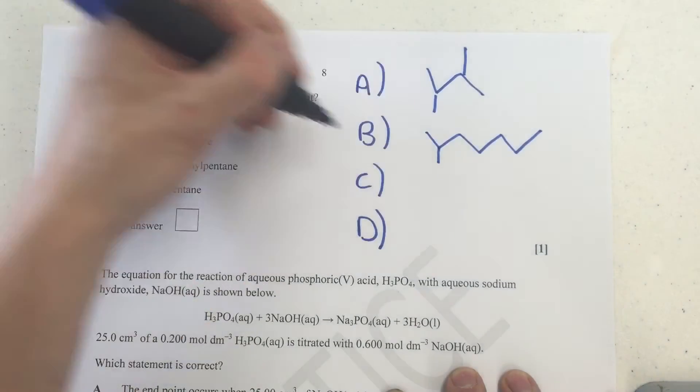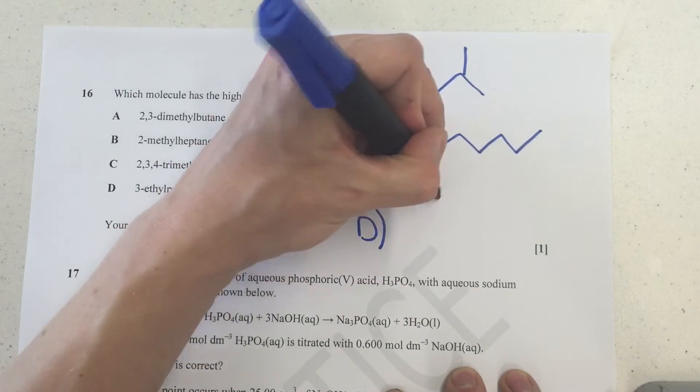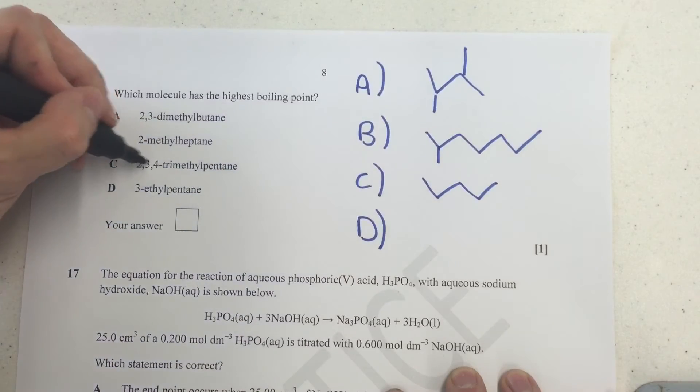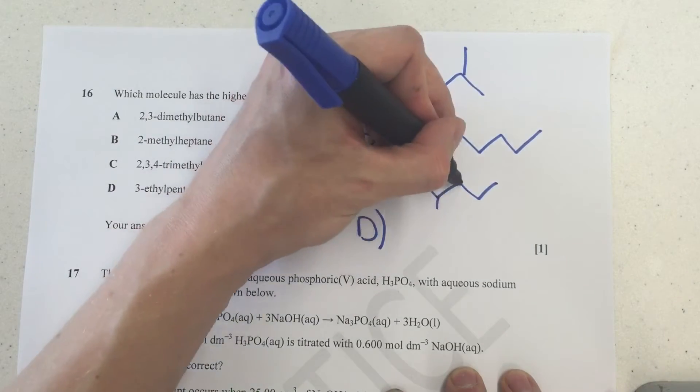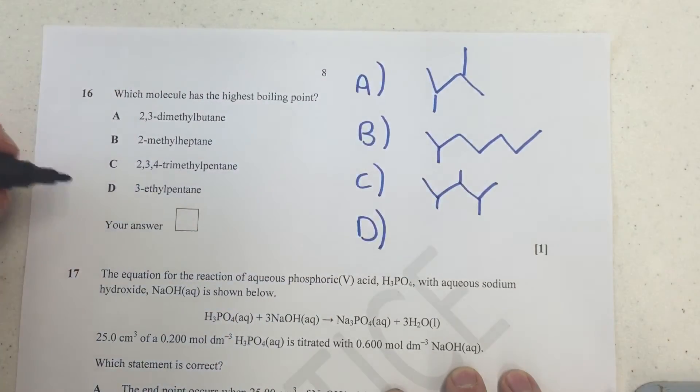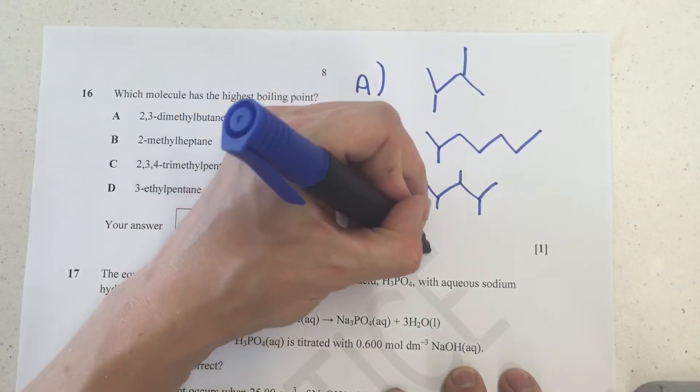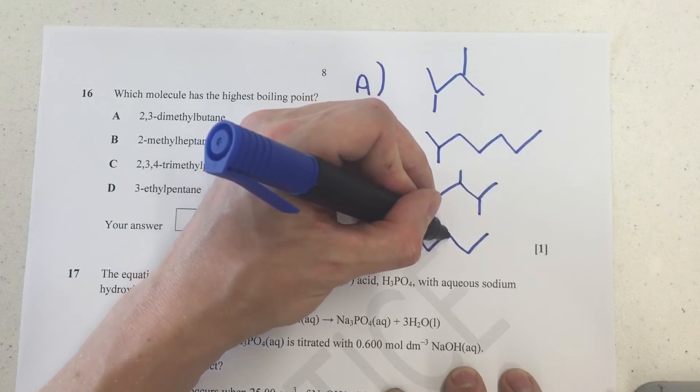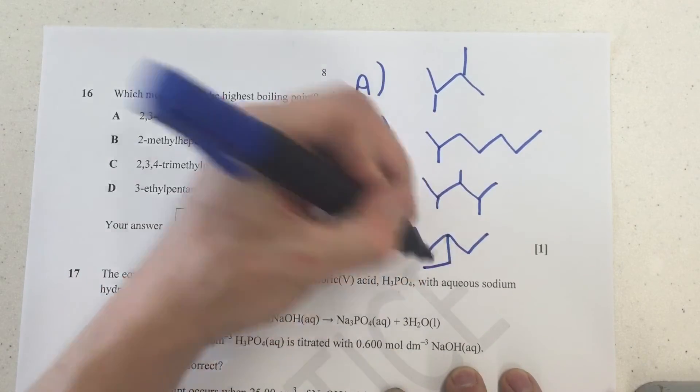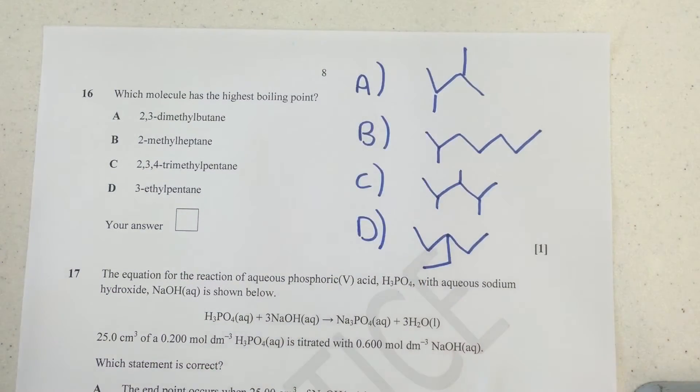C, that's a lot of branches. So you've got pent, that's 1, 2, 3, 4, 5. And then you've got 3 trimethyl groups. 1, 2, 3, like so. Sorry, 2, 3, and 4, I should have said with numbering. 3-ethylpentane. 1, 2, 3, 4, 5. And then on carbon number 3, 1, 2. And you're asked for this one, which molecule has the highest boiling point?